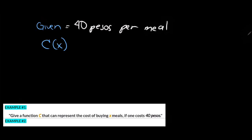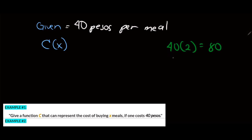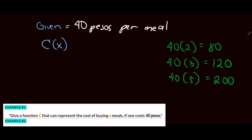Basically, if you want to purchase a meal, you need to multiply the number of meals by 40 pesos. For example, if I want to buy 2 meals, that is 40 times 2, which equals 80 pesos. If I want to buy 3 meals, that is 40 times 3, or 120 pesos. If I want to buy 5 meals, that is 40 times 5, which equals 200 pesos. So we simply need to multiply the number of meals by 40 pesos.